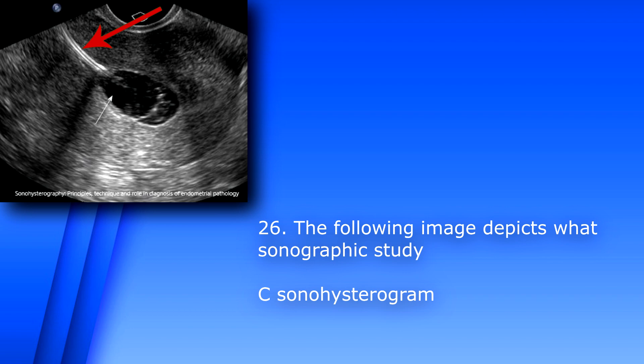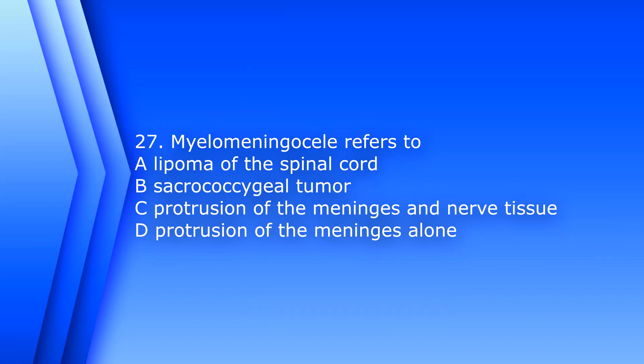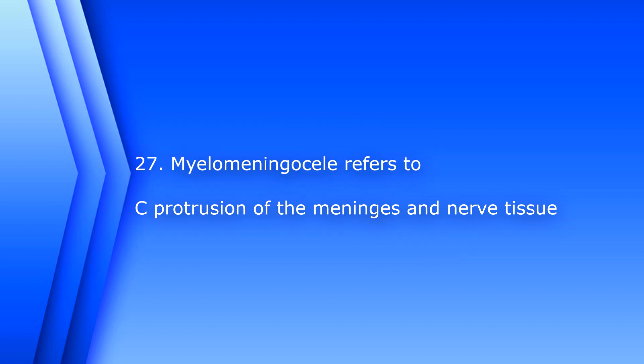Question 27: Myelomeningocele refers to A) a lipoma of the spinal cord, B) sacrococcygeal tumor, C) protrusion of the meninges and nerve tissue, or D) protrusion of the meninges alone. The answer is C, protrusion of the meninges and nerve tissue. Protrusion of the meninges alone would be called a meningocele.